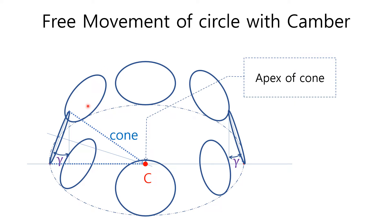If you roll a circle with camber angle gamma on a flat surface, the movement of the circle will follow a big circle described as a two-dotted chain line. The straight line perpendicularly passing through the center of the circle surface will meet point C somewhere on the flat surface. Imagine a cone with point C as its apex and the small circle surface as its base — the rotation trace of the circle is exactly the same as that of the cone. The two-dotted chain line represents the natural way of circle movement with camber angle gamma. As you can see, the natural movement of a circle with camber angle is not a straight line, but a big circle.